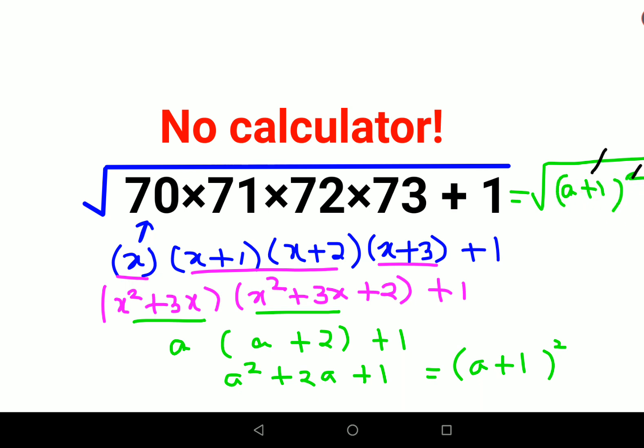As we know, the roots can get cancelled with the square, so I am just left with a plus 1. Now what is your a? a was nothing but X squared plus 3X.